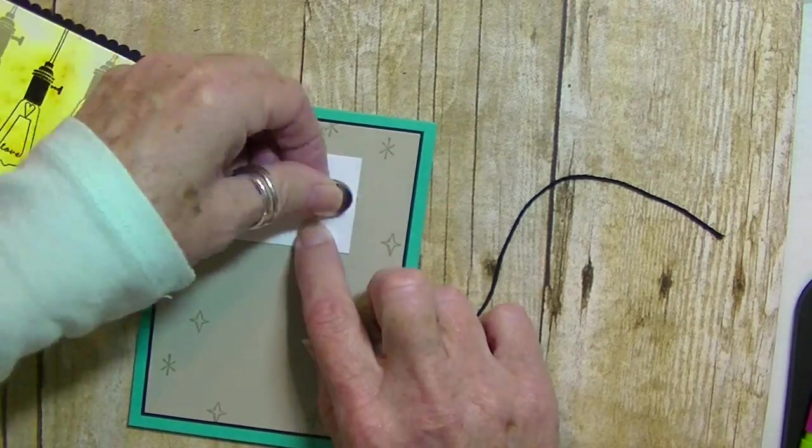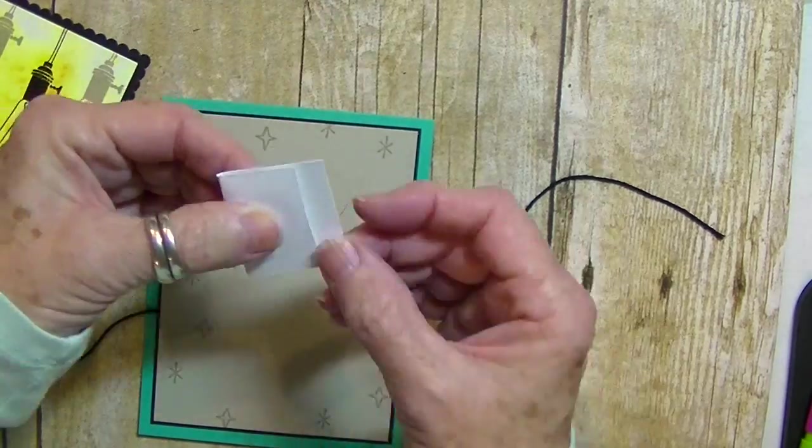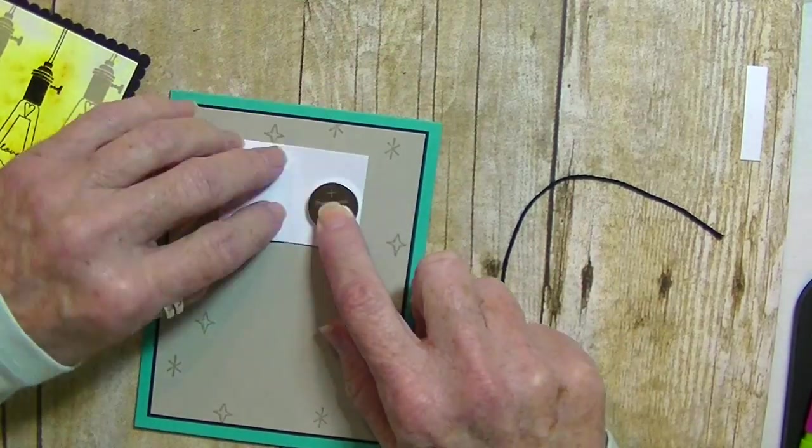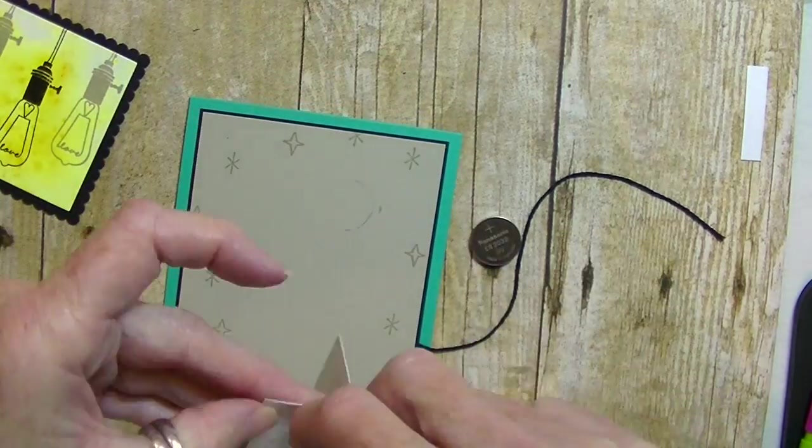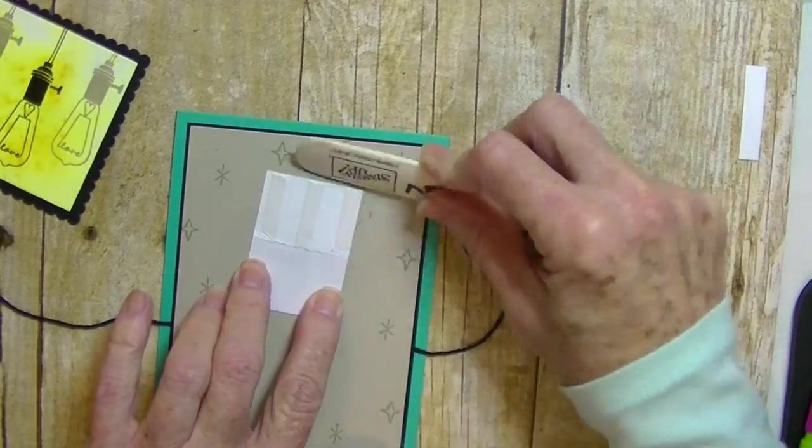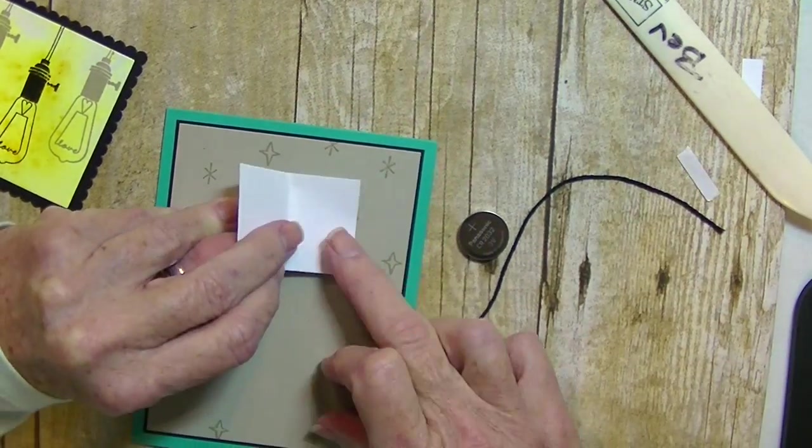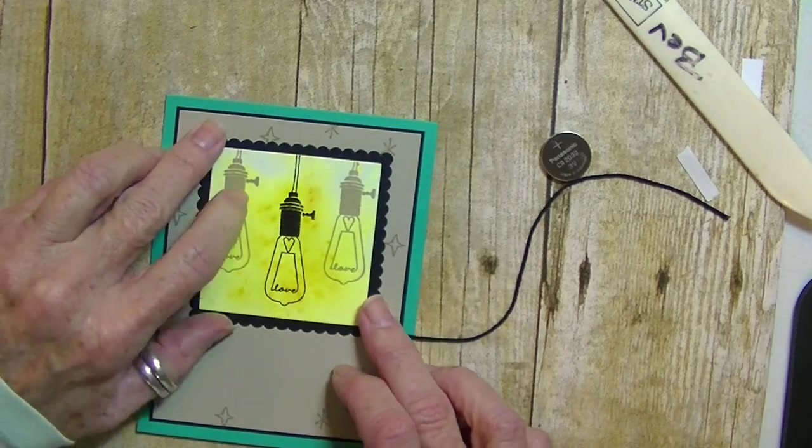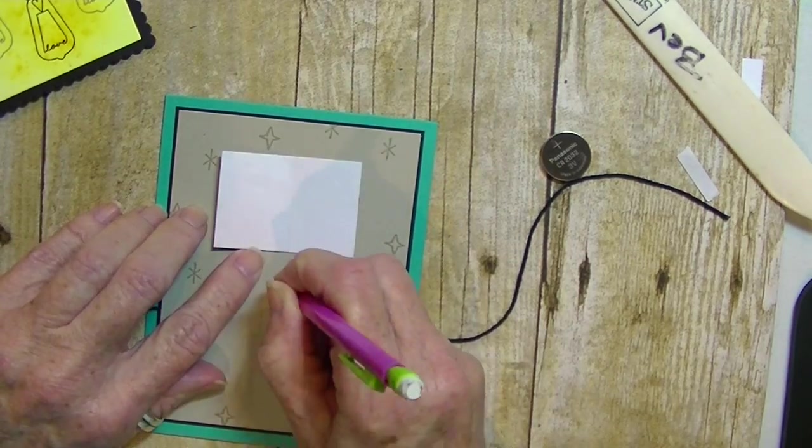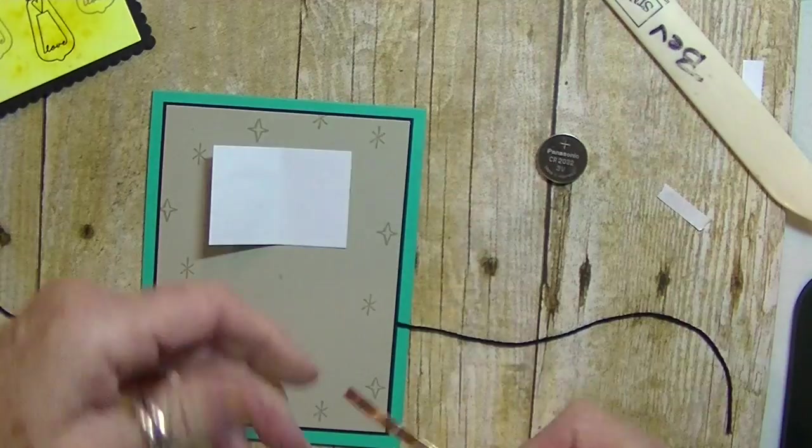And I'm going to create a little pocket, a security pocket if you will, for the battery. Adhering that to the card with some tape, making sure of the placement. Put in an X where the little LED sticker light goes.